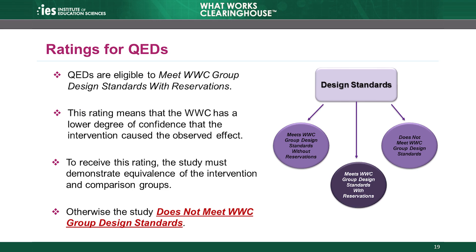The highest rating a QED can receive is meets WWC group design standards with reservations. This rating means that the WWC has a lower degree of confidence that the intervention caused the observed effect relative to an RCT. However, to receive this rating, the study must demonstrate that the groups were equivalent on baseline characteristics. We'll discuss baseline equivalence in the baseline equivalence module, which is Module 3. QEDs that do not demonstrate equivalence receive the does not meet WWC group design standards rating.